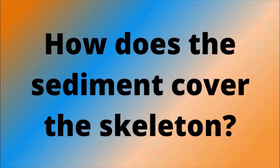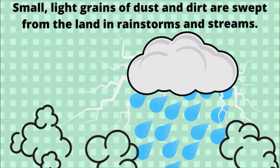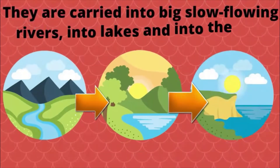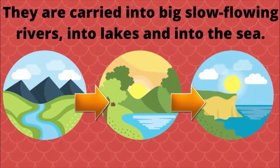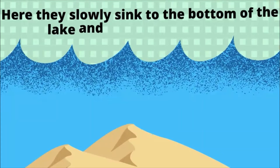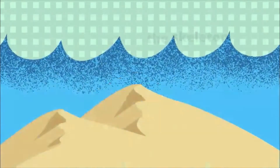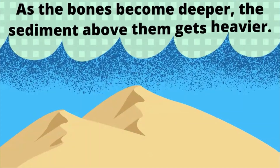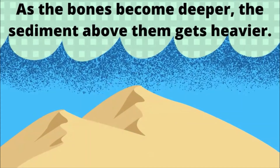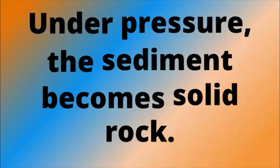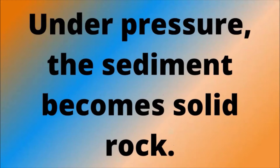How does the sediment cover the skeleton? Small, light grains of dust and dirt are swept from the land by rainstorms and streams. They are carried into big, slow-flowing rivers, into lakes and into the sea. Here, they slowly sink to the bottom of the lake and cover the skeleton. As the bones become deeper, the sediment above them gets heavier. Under pressure, the sediment becomes solid rock.